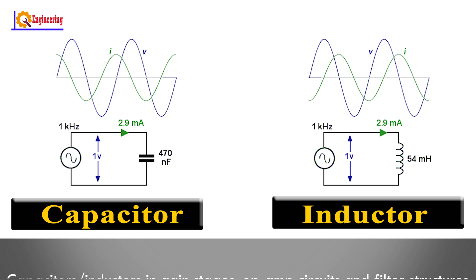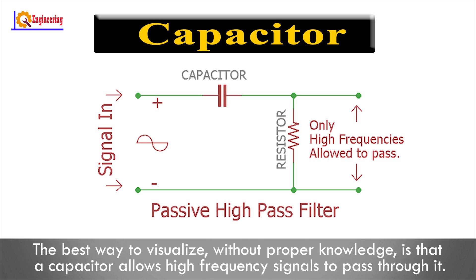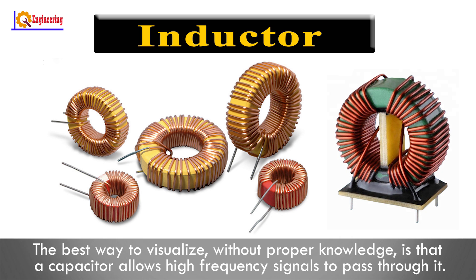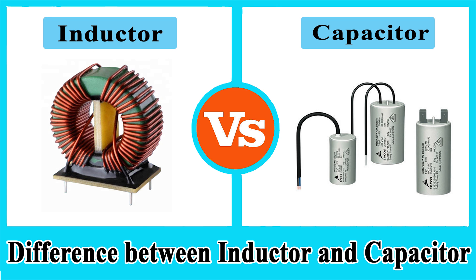The best way to visualize without proper knowledge is that a capacitor allows high-frequency signals to pass through it, while an inductor allows low-frequency signals through. In this video, I will show you the difference between a capacitor and an inductor.